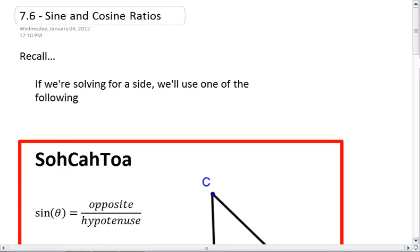Section 7.6, sine and cosine ratios. In our last section, we talked about tangent. And we remember that tangent of an angle is equal to the opposite leg over the adjacent leg if we have a right triangle.